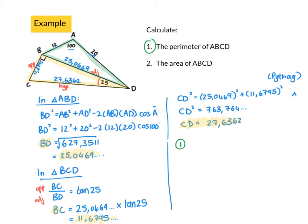Question one says the perimeter. The perimeter will be the sum of the outsides. I'm not going to include BD, just the outsides: 12 + 20 + 27.6362 + 11.6795. Using my calculator, my perimeter is 71.43 units, because I don't know my lengths.